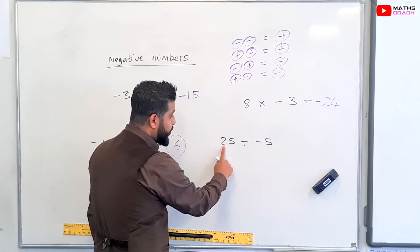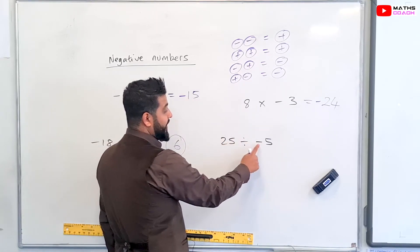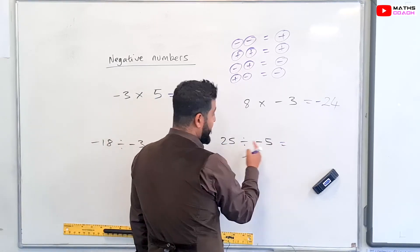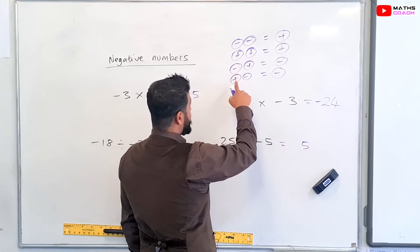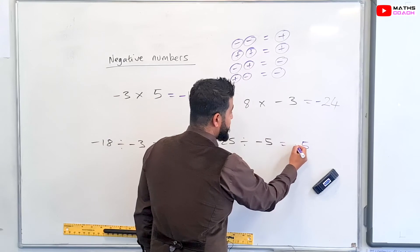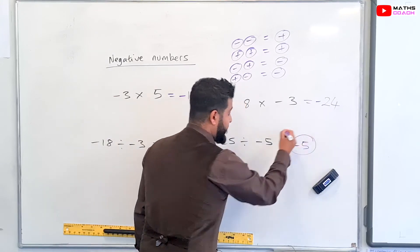Onto this last one, we have 25 divided by minus five. So it's a positive divided by negative. So therefore, 25 divided by five is five and positive divided by negative. So positive divided by negative here. So therefore, the answer will be minus five overall. And that's it.